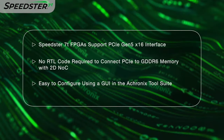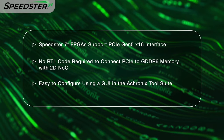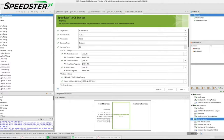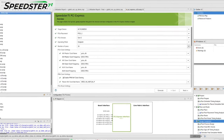The PCIe Gen 5 demo I'm showing requires no RTL code to connect between the PCIe interface and GDDR6 memory. The innovative two-dimensional network on chip, or 2D-NOC, in the Speedster 7T FPGA can directly connect the PCIe and memory interfaces without routing signals through the FPGA fabric. This is easily configured using the GUI interface in the Acronix tool suite.